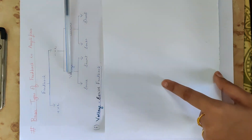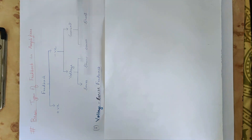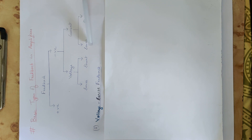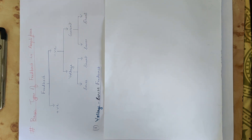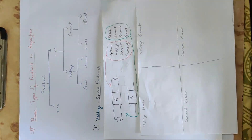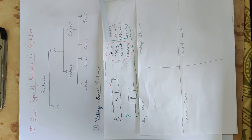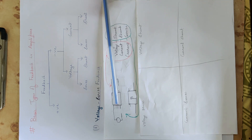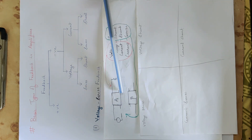The four feedback topologies are: voltage series feedback, voltage shunt feedback, current series feedback, and current shunt feedback. So we have four types — voltage series, voltage shunt, current shunt, and current series.